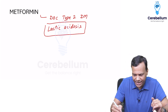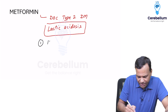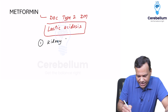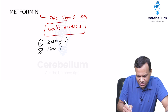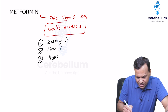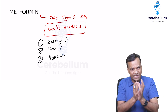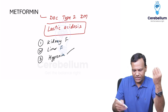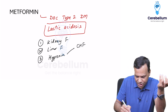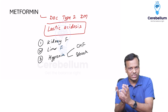Metformin is contraindicated in patients with kidney failure, patients with liver failure, and patients who are predisposed to hypoxia — where there is lesser oxygen in the tissues — such as patients with congestive heart failure, patients in shock, or any patient with a risk of hypoxia.